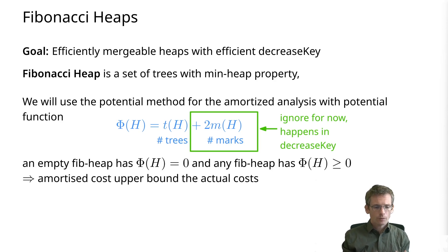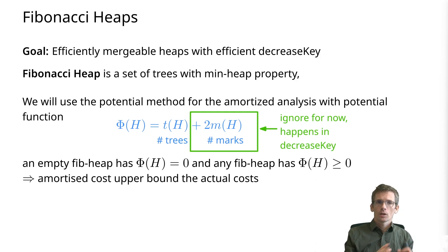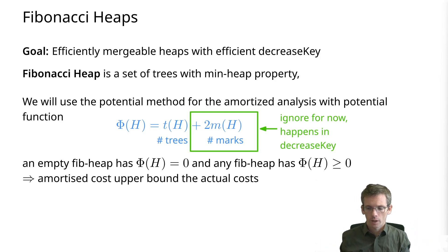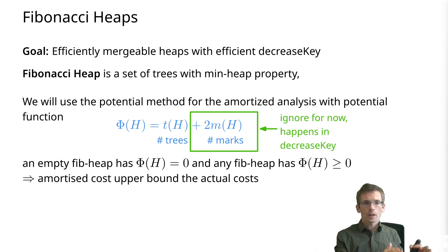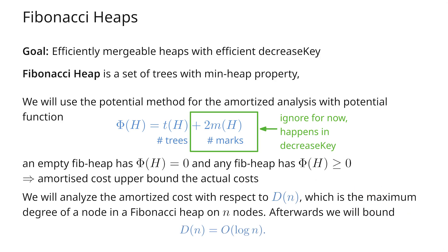Initially nothing is marked, so the initial potential is zero. Because both of these are positive numbers, the potential always stays non-negative, so the potential method applies and we can compute amortized cost as actual cost plus change in potential. We'll need this potential function. A key to the analysis is also bounding the maximum degree. For binomial heaps that was easy — the maximum degree is bounded by log n. Here we will do the analysis assuming a maximum degree of D(n), and at the end we'll show that D(n) is in O(log n).